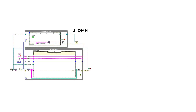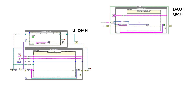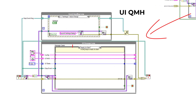Let's say we have a typical LabVIEW queued message handler application consisting of a main user interface queued message handler and a secondary data acquisition queued message handler. And let's say we want to send a message from the data acquisition message handling loop to the UI message handling loop, specifically to the UI message handling loop's ready to start case.